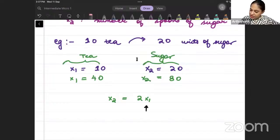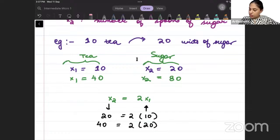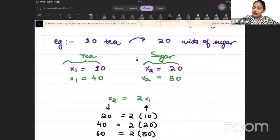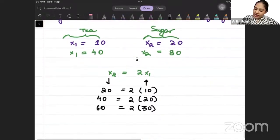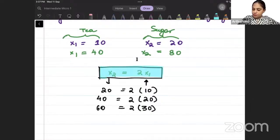When I need 10 units of tea, sugar will be 20. If we make 20 units of tea, I need 40 sugar. If we make 30 units of tea, I need 60 sugar. And so on and so forth. I need double sugar. So x2 is 2 times x1. Right?